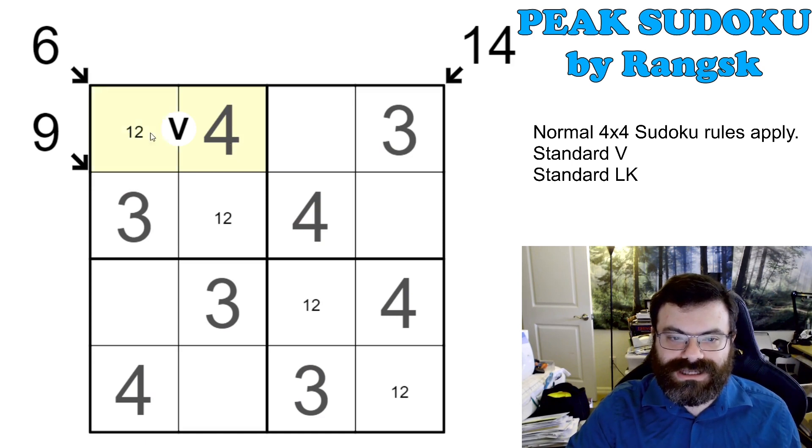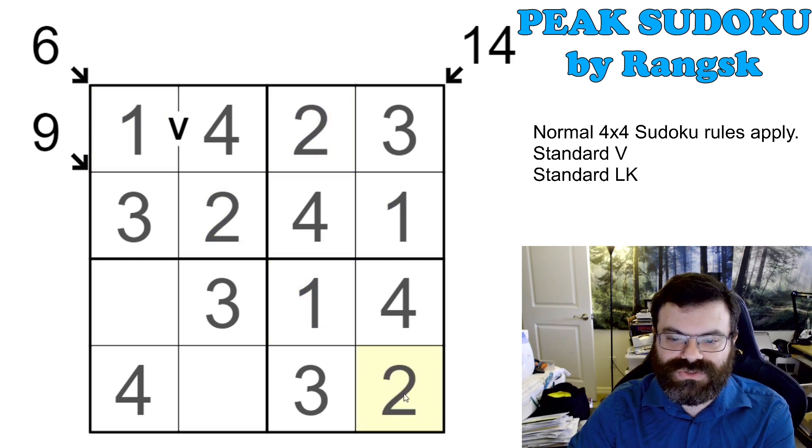And now, if you look closely, there's this V clue here, and this V clue, we have the 4, so this is forced to be 1. So this is 1, this is 2, this is 1, this is 2, 1, 2, 1, 2, and there we go. We're done.